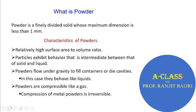The first thing that you start with in a powder metallurgy process is the powder itself. A powder can be defined as a finely divided solid whose maximum dimension is less than 1 millimeter. In broad terms, that is how you can define a powder. But a powder should also have certain characteristics, which are listed here.